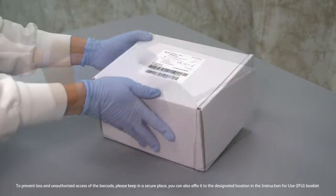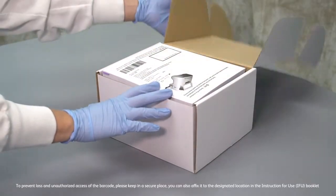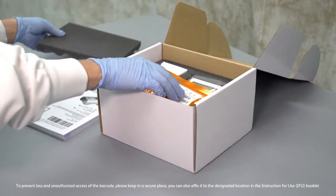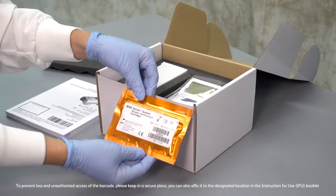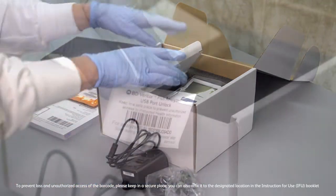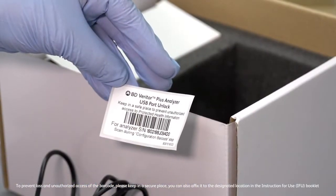The BD Veritor Plus Analyzer base unit comes packaged with an instructions for use booklet, a BD Veritor system verification cartridge, an AC power adapter, and a USB port unlock barcode sticker.